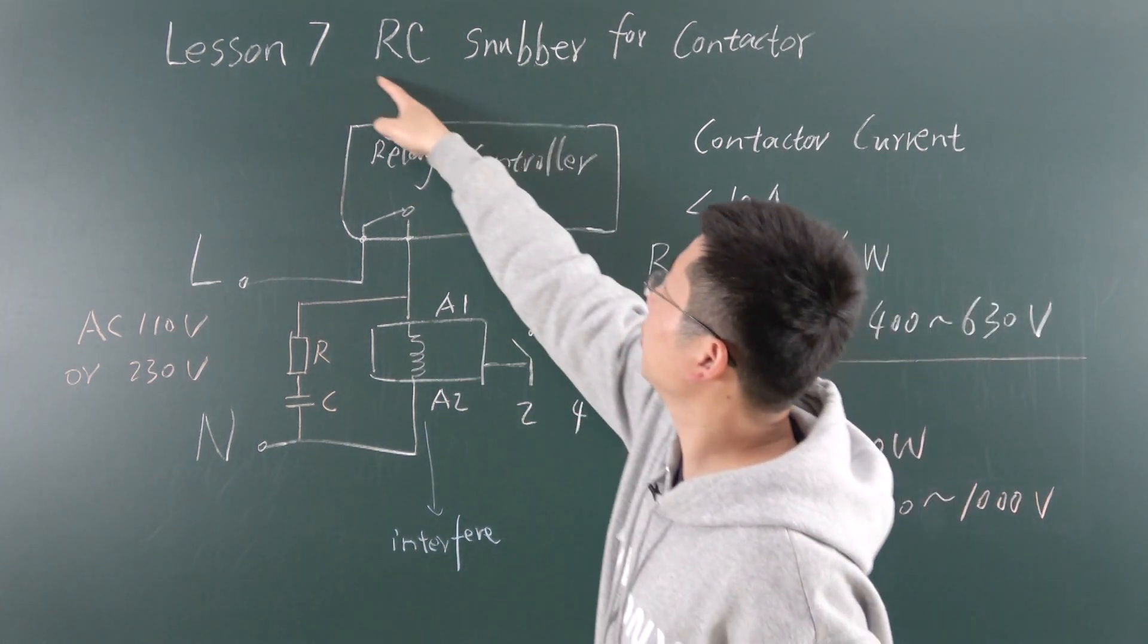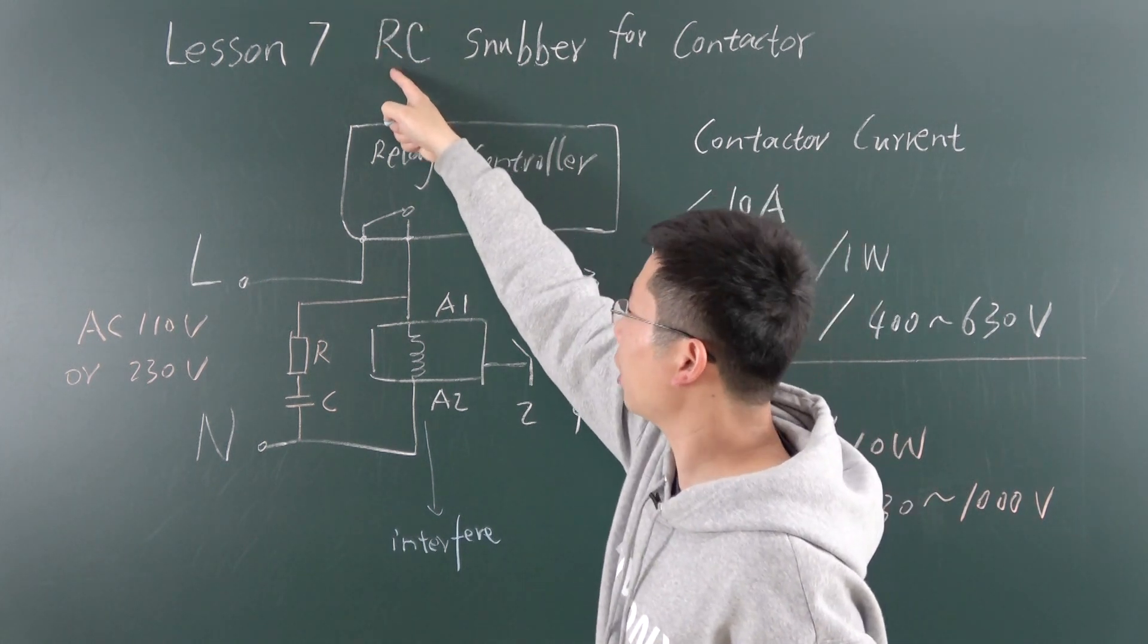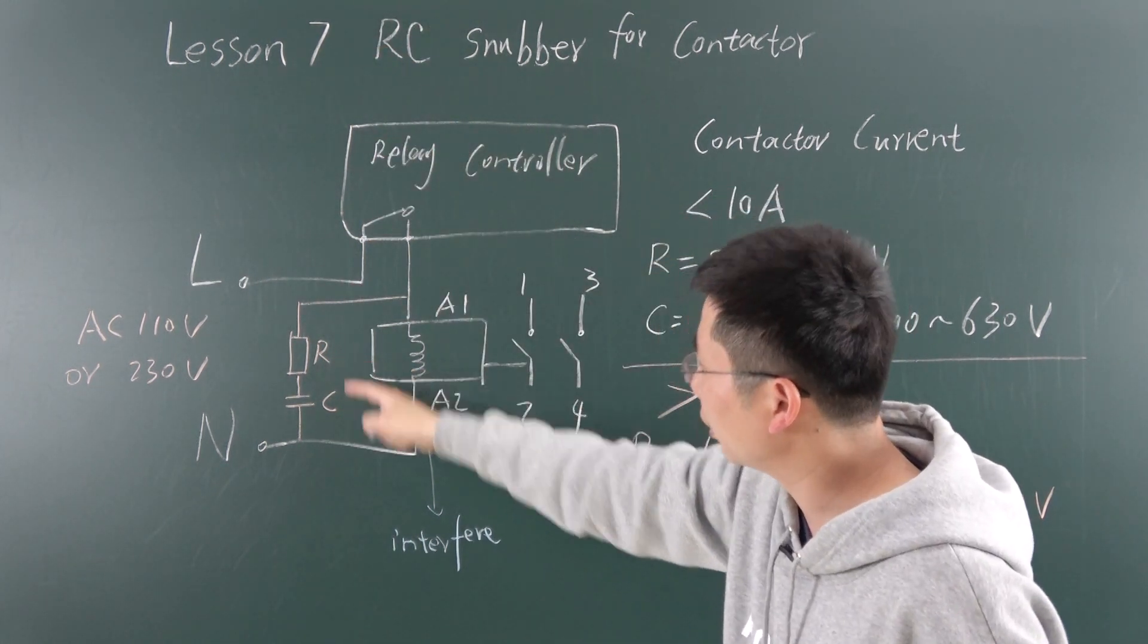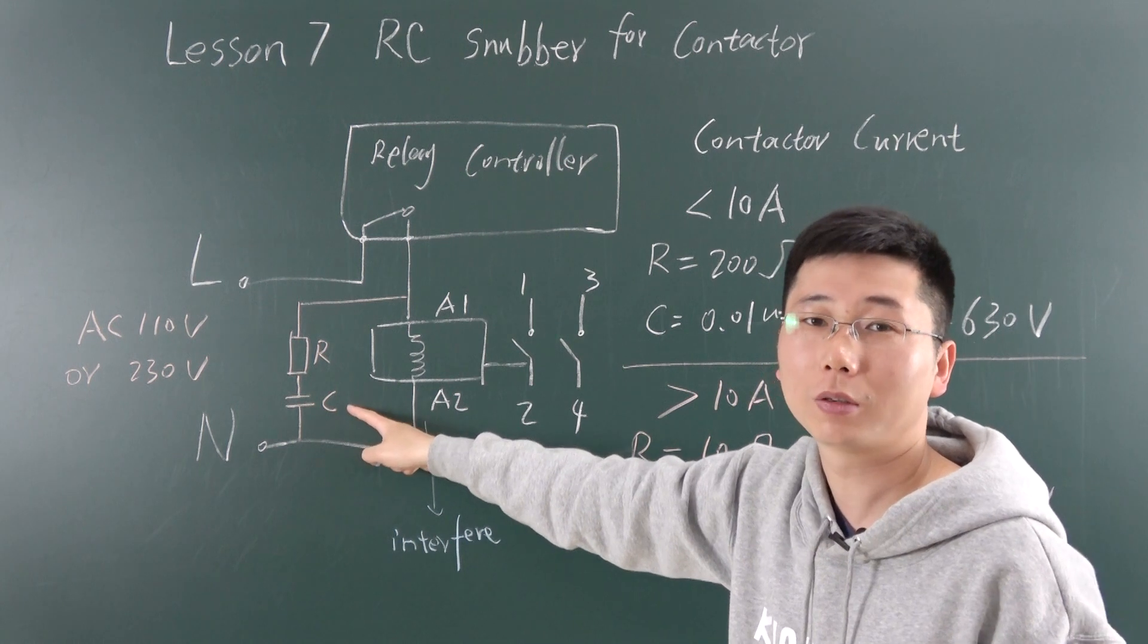But what does RC mean? This R means resistance, and this C means electrical capacitance.